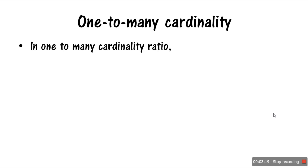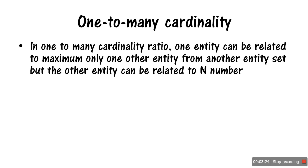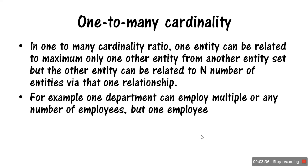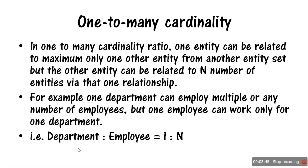Now let's look at one-to-many cardinality ratio. In one-to-many, one entity can be related to maximum one other entity, and the other entity can be related to N number of entities via that one relationship. For example, one department can employ multiple employees, but one employee can work only for one department.